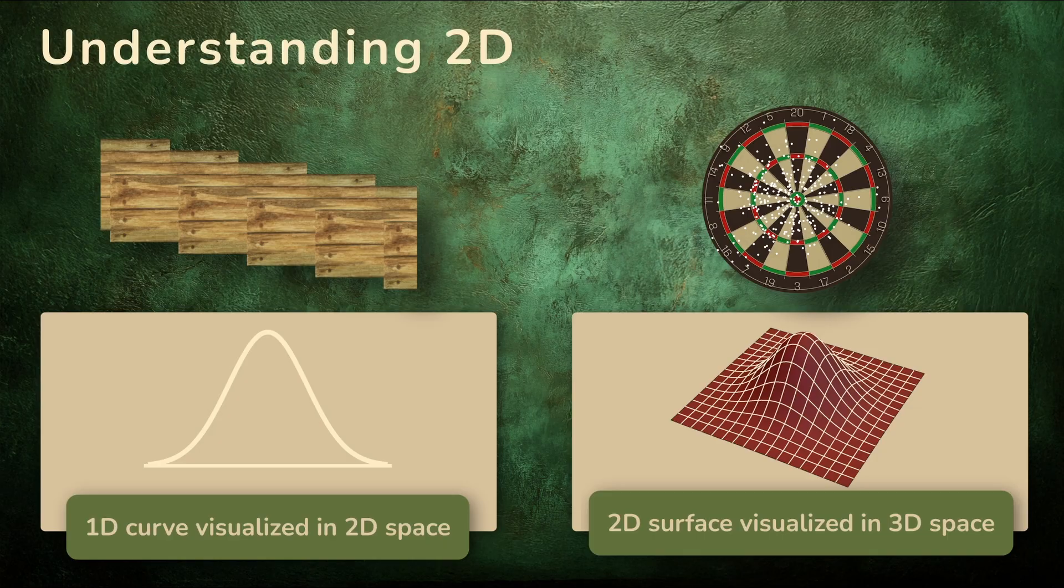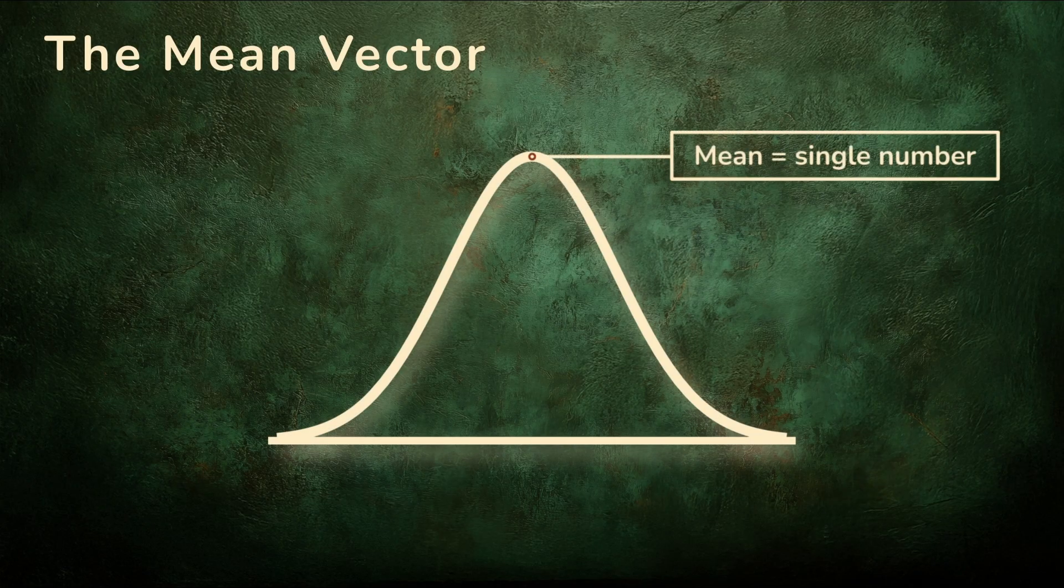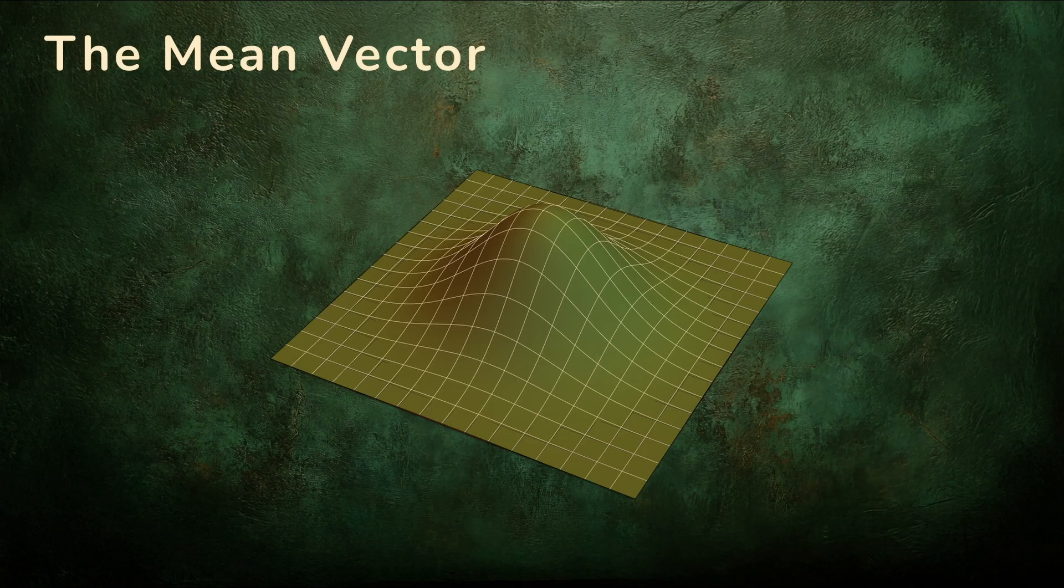This shape captures how likely each combination of x and y is to occur. For our one-dimensional example, the mean was a single number, the point right in the middle of the bell curve. But when we move into two dimensions, the middle is no longer on a line. It's a point in a plane.